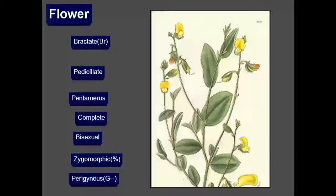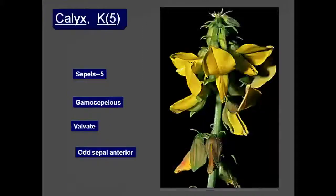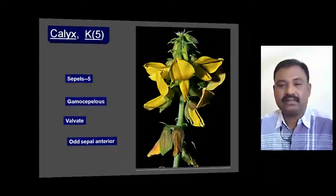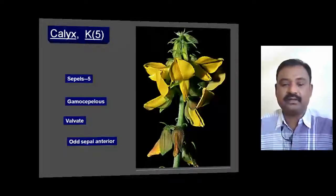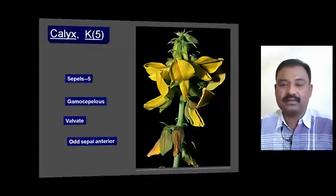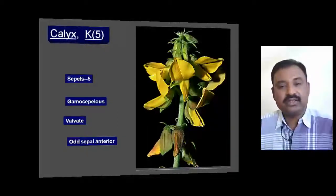The flowers are perigynous. The calyx has five sepals in a gamosepalous condition — that means the sepals are fused together, forming united sepals, arranged in valvate or imbricate aestivation.